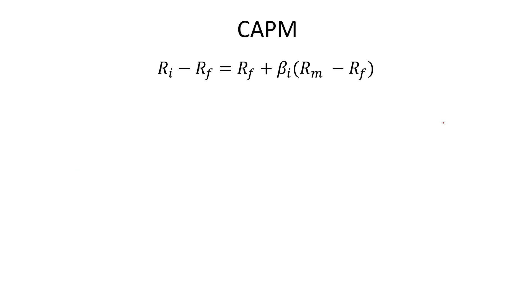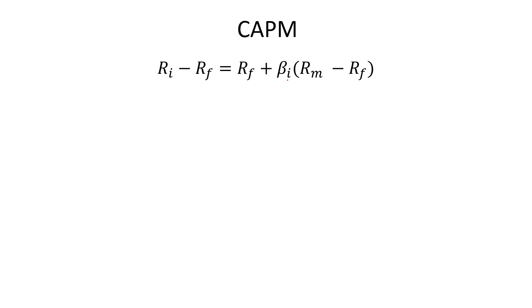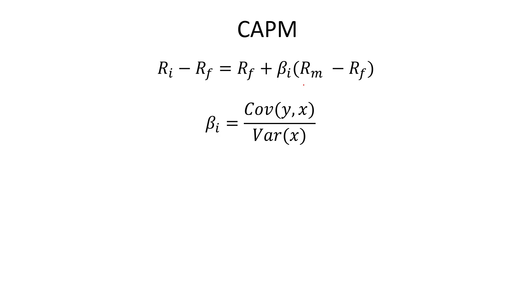Let's start with the equation of CAPM. The equation takes excess stock returns on the left side, and on the right side we have excess market return. This beta — the regression coefficient — is the measure of systematic risk. In terms of econometrics, beta is calculated as the covariance of Y and X divided by the variance of X, where Y is the dependent variable (excess stock return) and X is the independent variable — the market risk premium.